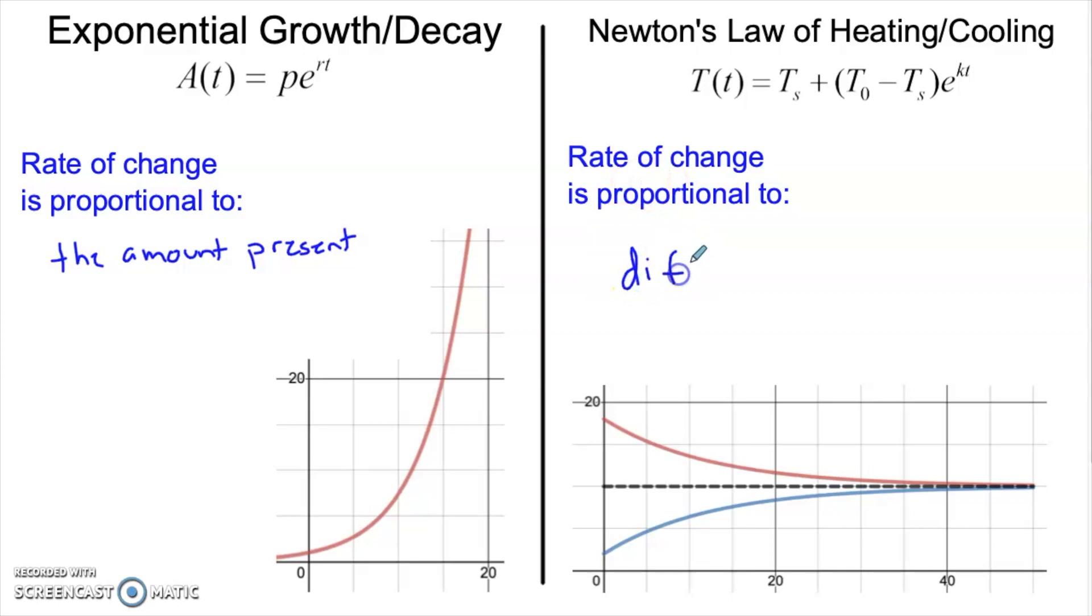Now Newton's law of heating and cooling, this is when the rate of change is proportional to the difference between the current value and the max value. In other words, if you go outside and it's really cold out, your body temperature is very different from the temperature outside. So you have a fast rate of change. In other words, you lose heat quickly to the outside environment.